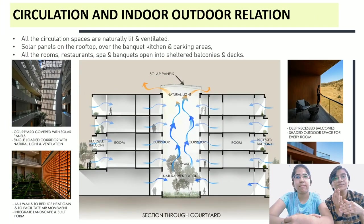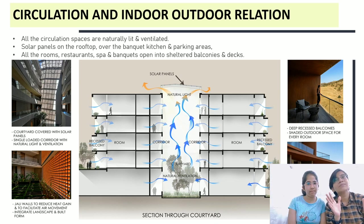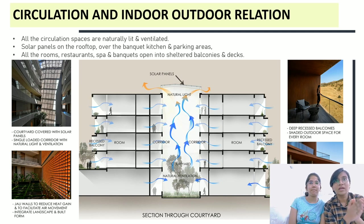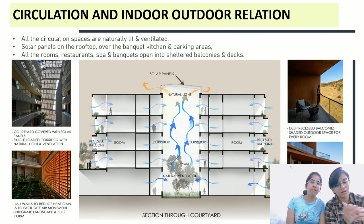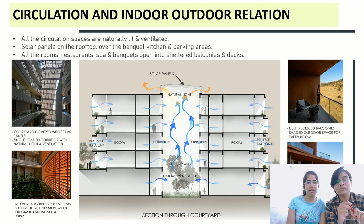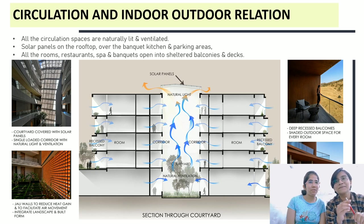Now comes the circulation and indoor-outdoor relation of the structure. All the circulation spaces are naturally lit and ventilated. Solar panels are placed on the rooftop over the banquet, kitchen and parking areas. Courtyards are covered with solar panels and the single-loaded corridor has natural light and ventilation. There are jalis in the walls to reduce heat gain and to facilitate air movement, integrating the landscape and the built form. They have deep recessed balconies with shaded outdoor space for every room.